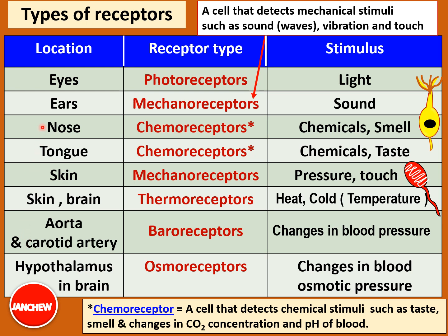Before we discuss the questions, let's look at some types of receptors in the human body. In the sensory organ the eyes, we have photoreceptors in the retina at the back of the eye that detect the stimulus of light — the word photo means related to light. In the ears we have mechanoreceptors that detect the stimulus of sound. Mechanoreceptors are receptors that can detect mechanical stimuli such as pressure, sound waves, vibration and touch. In the exam, since this term is not often required, we can just write 'receptors that are sensitive and able to detect the stimulus of sound.'